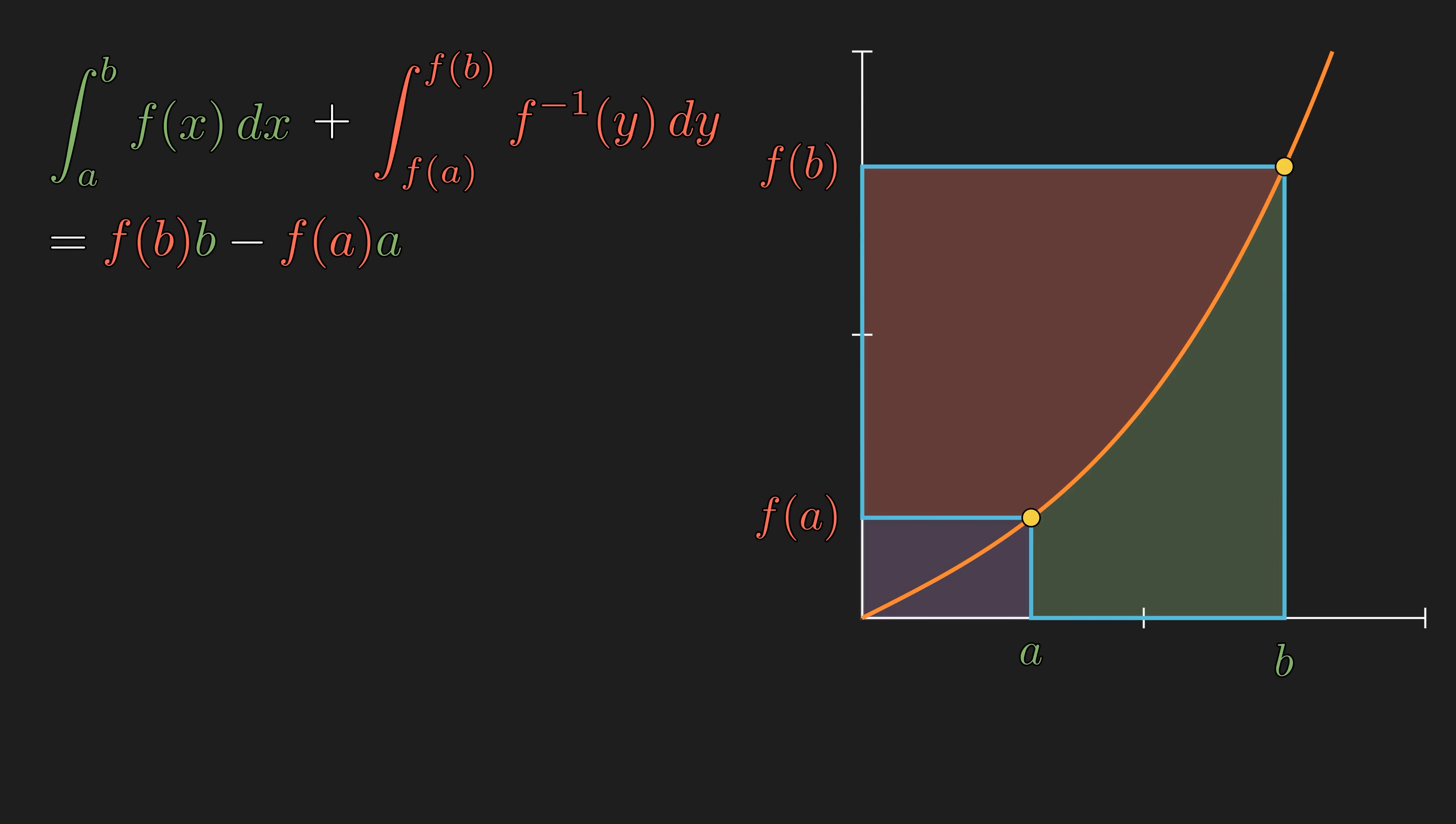Now, if we want a formula for the indefinite integral of f inverse, we want to change the limits of the integration on the vertical axis so that it goes from some fixed alpha to the variable y. And we can rewrite the horizontal limits in terms of alpha and y.